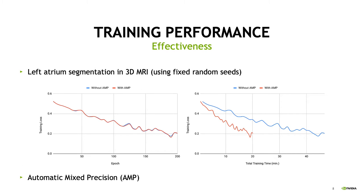Here we show the training performance of left atrium segmentation in 3D MRI. For fair comparison, we use a fixed random state, and we compare the training loss curves of training with automatic mixed precision (AMP) and without AMP. From the left figure, the training loss curves are almost identical for the two instances across different epochs. On the right-hand side, we can see that training with AMP takes about half the training time of training without AMP, which means AMP reduces the training time by a large margin.